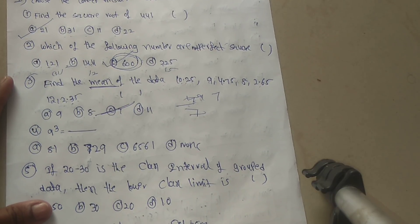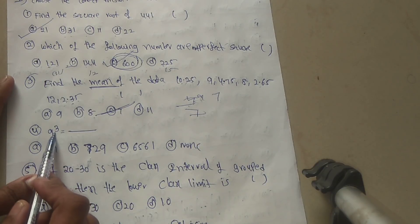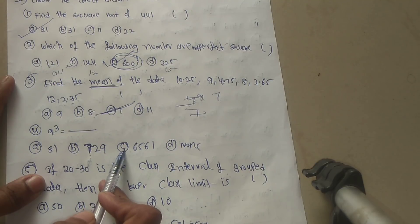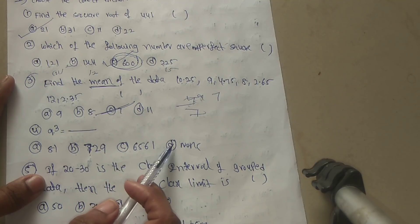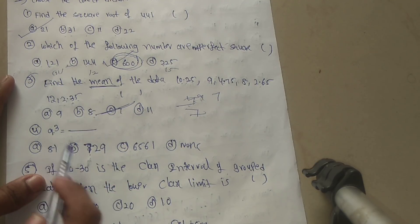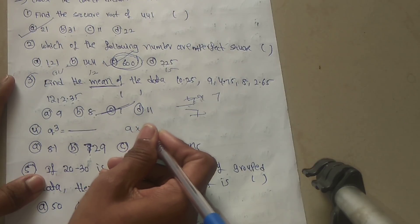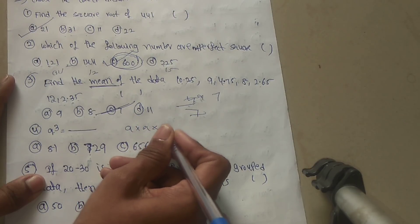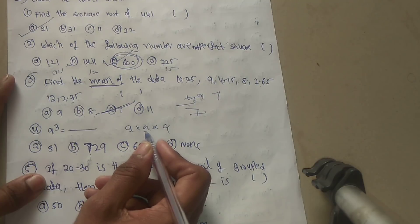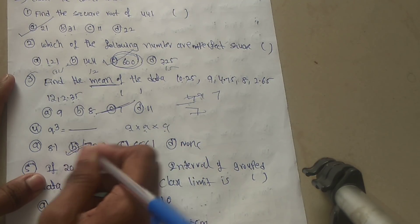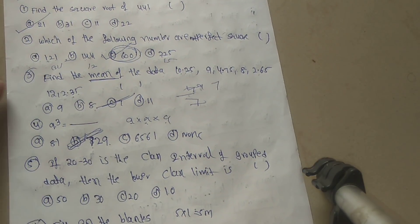Fourth question: what is the value of 9 cubed? Option A: 81, Option B: 729, Option C: 6561, Option D: none. 9 cubed means 9 into 9 into 9. 9 nines are 81, and 81 nines are 729. So Option B is the answer.